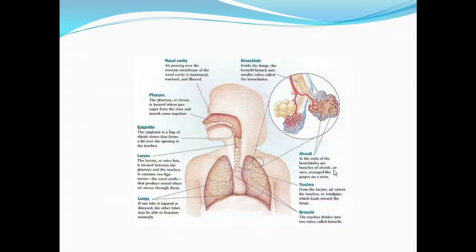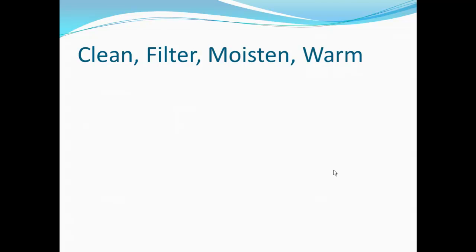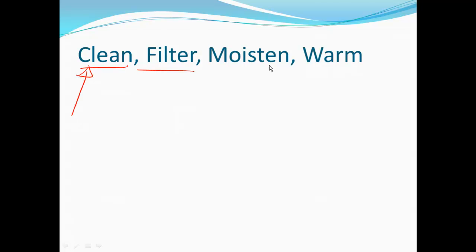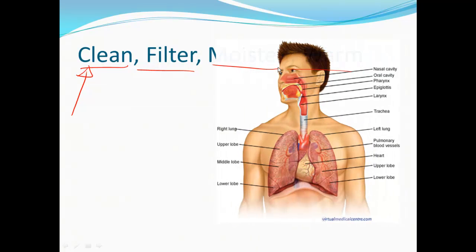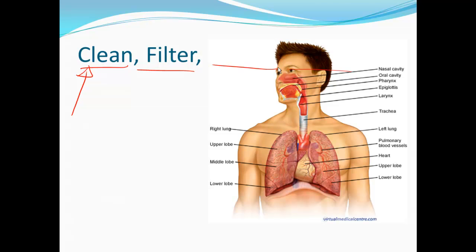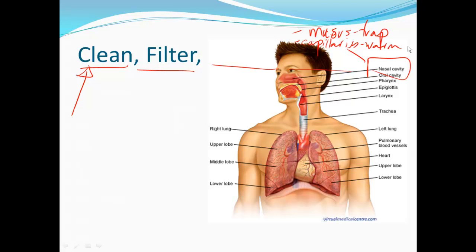We need to understand why we have this airway: we have it to clean, filter, moisten, and warm the air. Starting with the nasal cavity — mucus traps particles. The nasal cavity is also rich in capillaries, which warms the air. Unfortunately for some of us, this also means nosebleeds — you can actually see the little capillaries if you look up into your nostril.